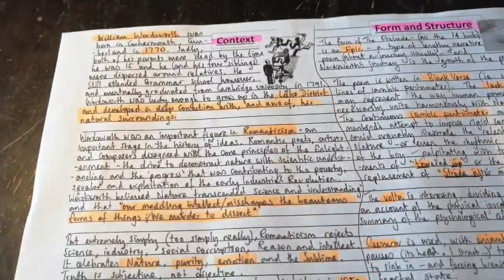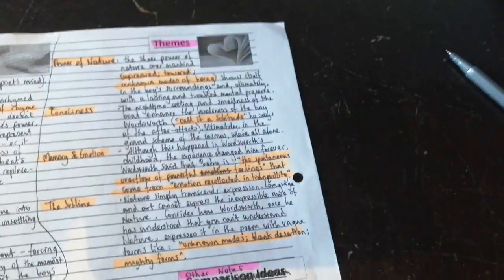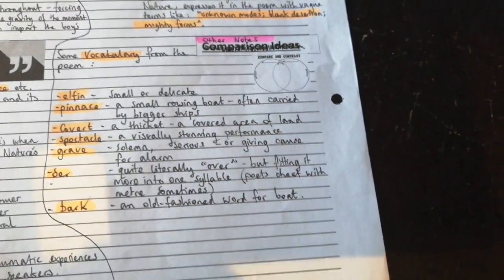So just going to turn the camera around, zooming onto it now. So you've already got the context. You've already got the themes written down from last lesson. Some of the vocab is important and you've got that.